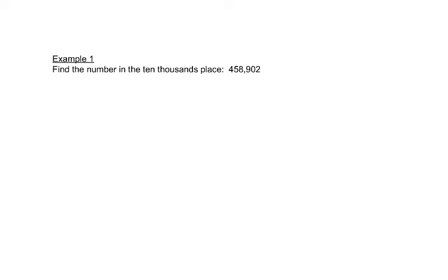This problem wants us to find the number in the ten thousands spot. The two is in the ones spot, the zero is tens, the nine is hundreds. Then we have the next group, so eight is in the one thousands spot. That means that five is in the ten thousands spot, so the answer is five.